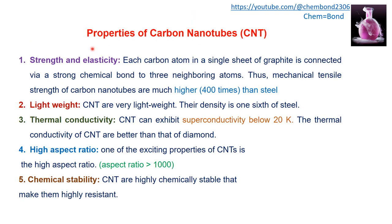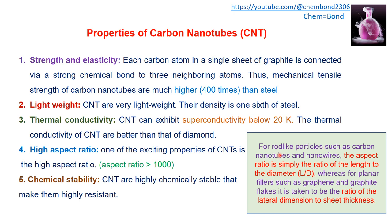Regarding properties of carbon nanotubes: in terms of strength and elasticity, each carbon atom in a single sheet of graphite is connected by strong chemical bonds to three neighboring atoms. As a result, the mechanical tensile strength of carbon nanotubes is much higher than steel. Carbon nanotubes are also lightweight — their density is one-sixth that of steel.